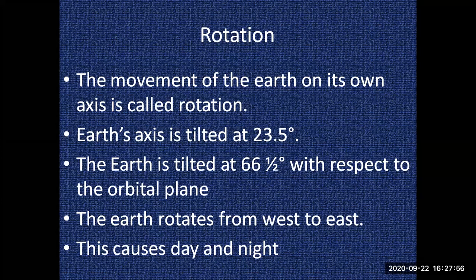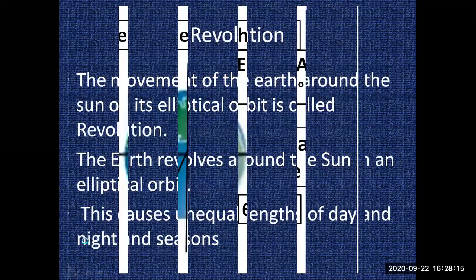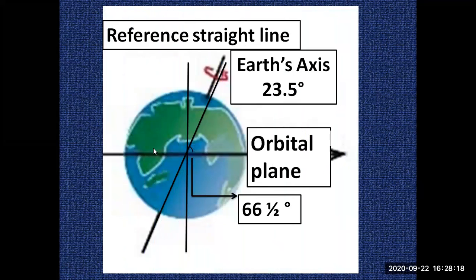The Earth is tilted at 66.5 degrees with respect to the orbital plane. The orbital plane is the straight line along the Earth's orbit. So the Earth is tilted at 66.5 degrees with respect to that orbital plane.